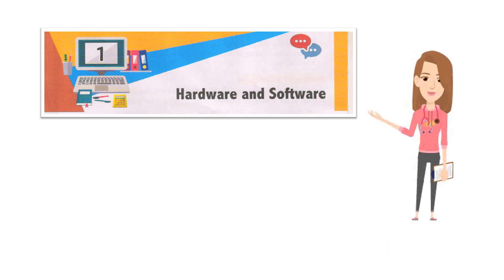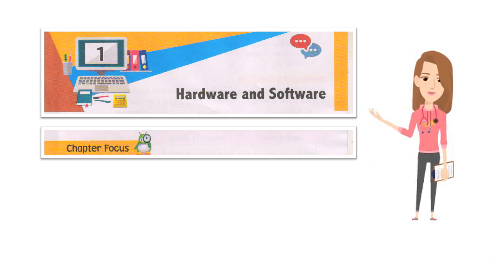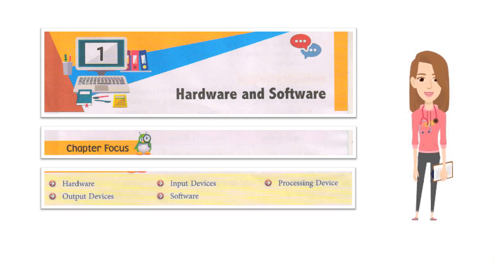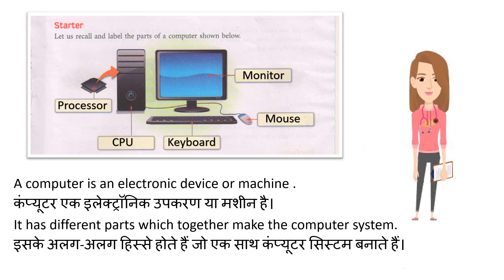Chapter 1: Hardware and Software. Adhyay 1: Hardware or Software. Chapter focus: Hardware, Input Devices, Processing Device, Output Devices, Software. Starter: Let us recall and label the parts of a computer shown below.